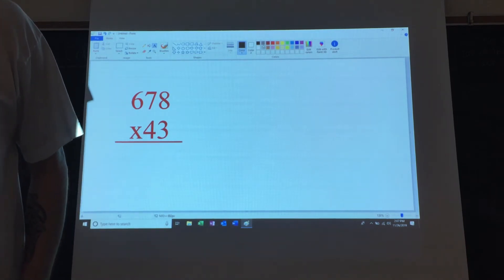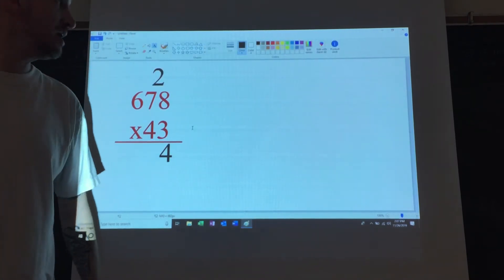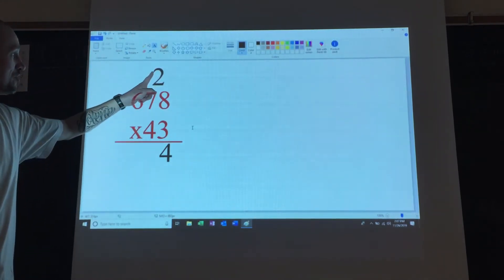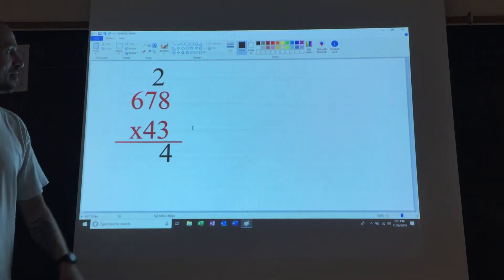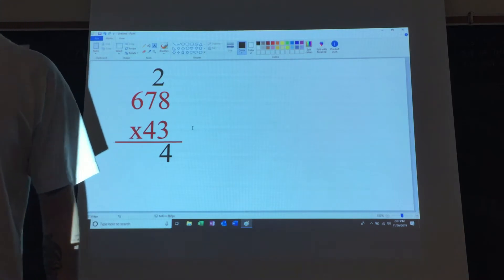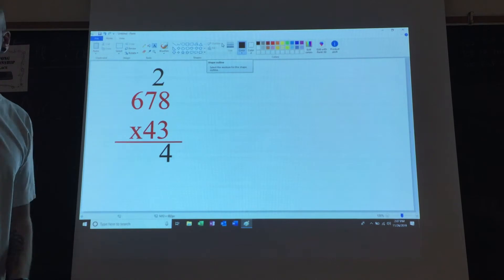What's 3 times 8? 24. So we put the 2 up here, the 4 down here. The next step is 3 times 7. What is 3 times 7? Yes, 21. So 3 times 7 is 21 plus the 2 is what? Yes, 23. 2 up here, 3 down here.